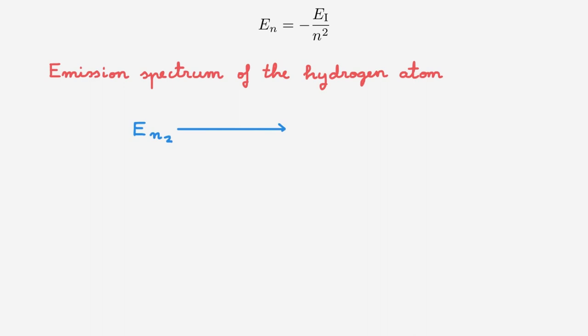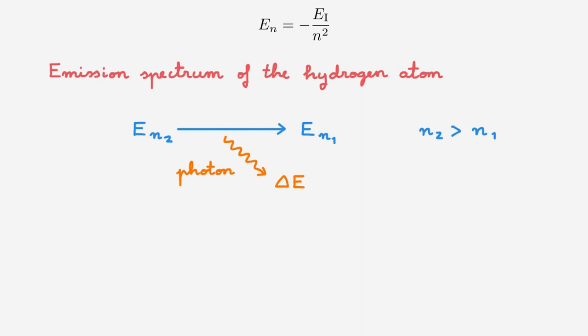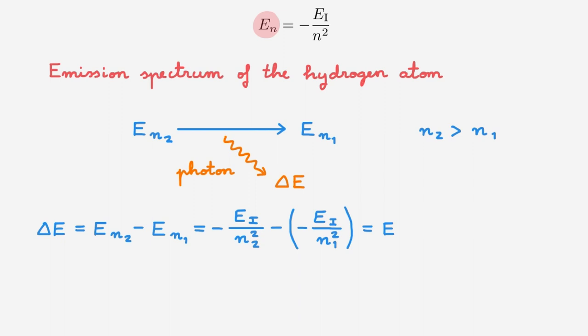We're going to consider a hydrogen atom in an initial energy eigenstate N2 and a final energy eigenstate N1. The transition between the two states is accompanied by the emission of a photon, and we will label its energy with delta E. Note that for emission, we always need N2 to be larger than N1. The energy of the photon is equal to the energy difference between the two energy levels, and can be written as EN2 minus EN1. Using the expression for the energy eigenvalues, we can rewrite it as this expression for EN2 minus this expression for EN1. Rearranging, we end up with the ionization energy multiplying 1 over N1 squared minus 1 over N2 squared.